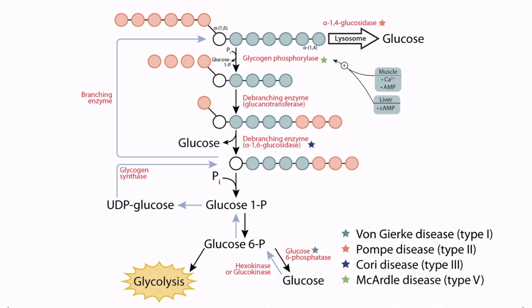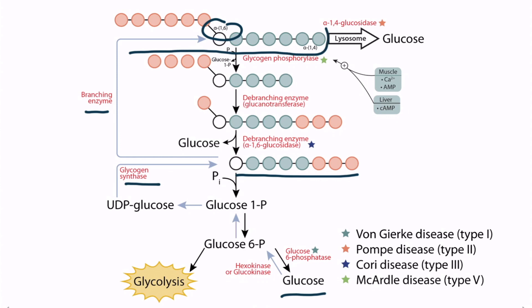Let's talk about glycogenesis first. Glycogen is formed from glucose, and you can see each step of synthesis represented by a blue arrow and a corresponding enzyme. Notice that glycogen synthase forms glycogen first as a linear molecule, and then the branching enzyme creates alpha-1,6 linkages, causing the glycogen molecule to branch into a complex polymer of glucose, which you can see right here.